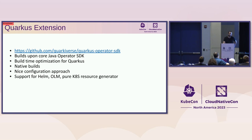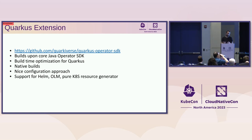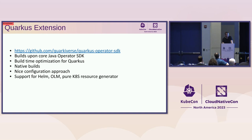A little more about the Quarkus extension: Quarkus is a major cloud-native Java framework, and we support an extension for Java Operator SDK on top of it. It supports Helm, OLM, and pure Kubernetes resource generation. You can compile your project to native binaries and get all the Quarkus goodies — its nice configuration approach and build-time optimization. Things that would normally be done at runtime in Java can be done at build time in Quarkus, making it probably much more efficient than the core in some regards.